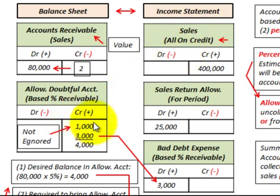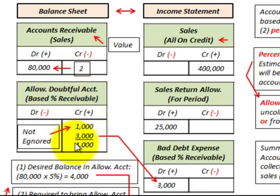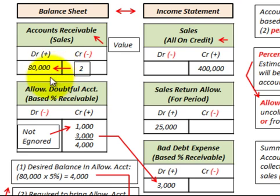The key difference: for the percentage of sales method, we did not include the existing $1,000 in our estimate. For the percentage of receivables method, we had to include it, because we're looking for the net realizable value. So we take the $80,000 in accounts receivable, subtract the $4,000 allowance account balance, and arrive at $76,000 — the amount we would actually realize as cash received.